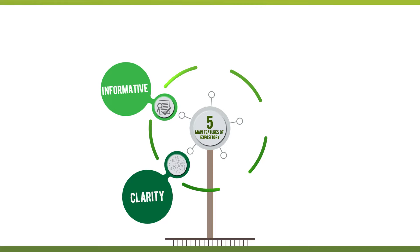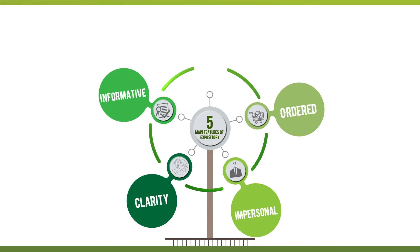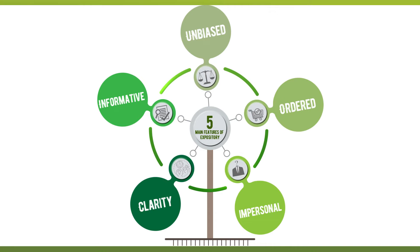There are five main features of expository writing that every writer should know before they begin the process. Informative, it should provide information. Clarity, it should provide clarity to the audience. Impersonal, it should be impersonal. Ordered, it should be in chronological order. Unbiased, it should not be biased.